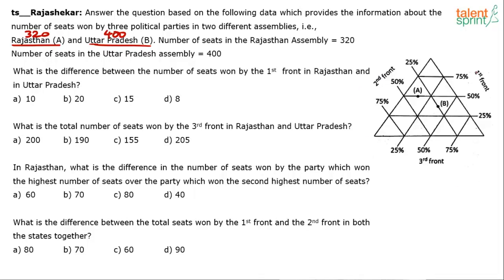The diagram shows the number of seats won by three political parties: the First Front, the Second Front, and the Third Front. In this triangular diagram, you have A and B plotted somewhere. The whole challenge in this question is interpretation of the data — once you interpret the data, answering these questions becomes very easy. How do you basically extract the values? It's very simple — let me explain.